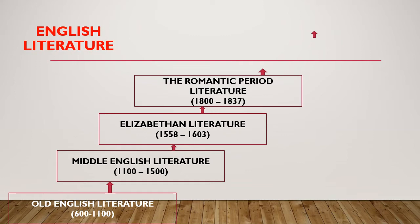Next is the Romantic period, from the 1800s to 1837 — the golden age of lyric poetry. It became the expression of the poet's personal feelings and emotions. Some of the works are Songs of Innocence and of Experience by William Blake, Lyrical Ballads by William Wordsworth and Samuel Taylor Coleridge, The Eve of St. Agnes by John Keats, Don Juan by Lord Byron, and Ode to the West Wind by Percy Bysshe Shelley.